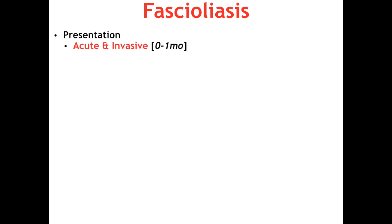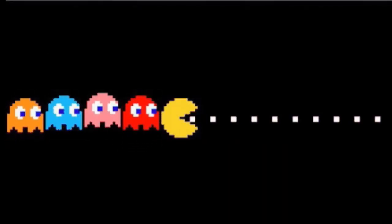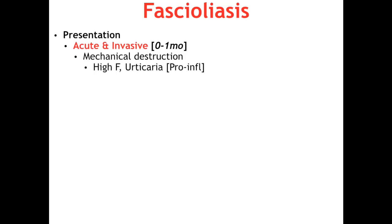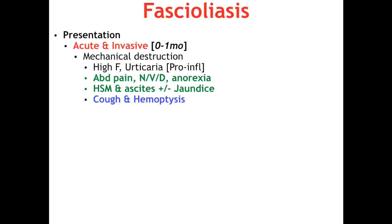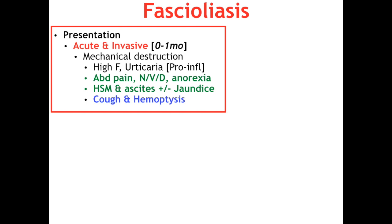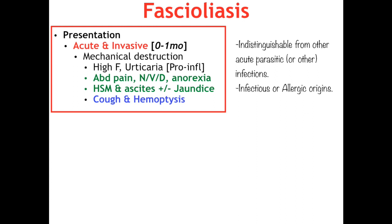In the acute phase of fascioliasis, occurring days to months post-ingestion depending on parasite load, presentation is due to tissue destruction by baby flukes eating their way from the duodenum to the bile ducts. The profile includes high fever, rash, abdominal pain, nausea, vomiting, diarrhea, hepatosplenomegaly, ascites, cough, and hemoptysis. On Step you'll see symptom lists that are seemingly nondescript — pick out the most relevant signs. Here, the high fever and rash are pro-inflammatory, pointing toward an infectious or allergic cause.